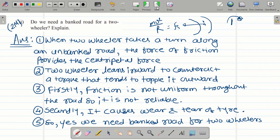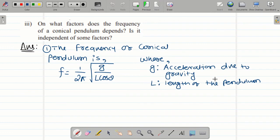Next question: On what factors does the frequency of a conical pendulum depend? Is it independent of some factors? The frequency of the conical pendulum formula is: f equals 1 over 2π times square root of g over L cosine theta.